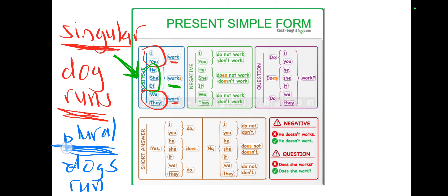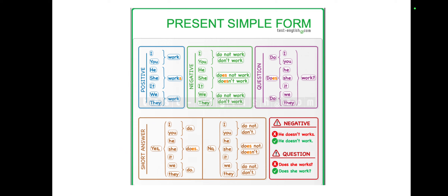Now let's look at the negative form. Whenever you see I, you, we, or they, we use 'do not' or 'don't.' On the other hand, if you see he, she, or it — they are singular because it's only one person — so we have to use 'does not' or 'doesn't.'